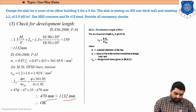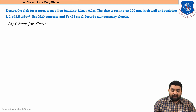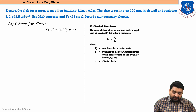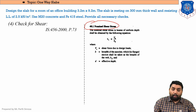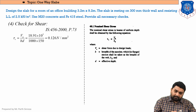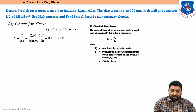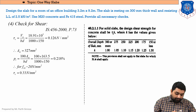The third check — check for development length — is okay. Moving to the fourth and final check: check for shear. Referring to IS 456 page 73, clause 40.1 (nominal shear strength), we first calculate τv = V / (b × d). V is already calculated, b = 1000 mm (one metre), d = effective depth. τv comes out to be 0.126 N/mm².